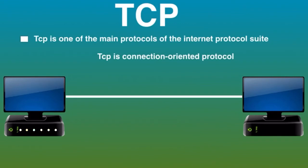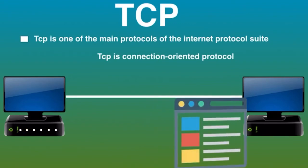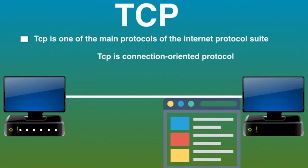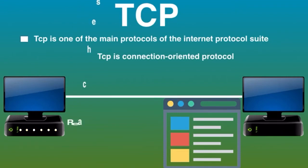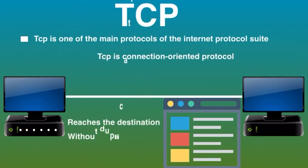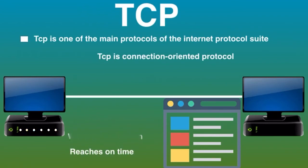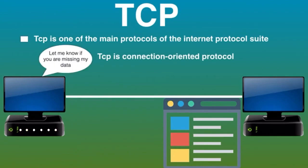For example, when you want to view a web page or download a file, you would expect to view the web page complete and unbroken with nothing missing. If you are downloading a file, you would want the full file, not just a part of it, because if data is missing it would not be any good to you. TCP ensures three things: data reaches the destination, reaches on time, and reaches without duplication. TCP automatically breaks data into packets before transmission.